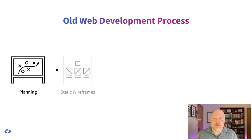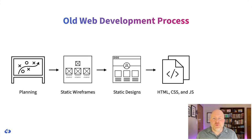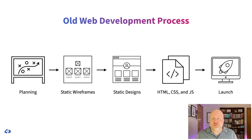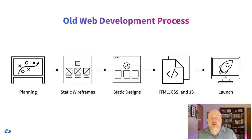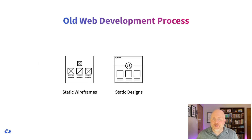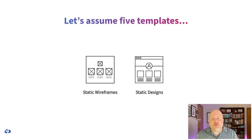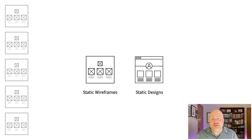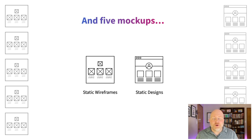This is how we've historically built sites. We put together some plans, we create some wireframes, then somebody creates mock-ups from those wireframes. Eventually, those mock-ups are converted into HTML, CSS, and JavaScript. And at some point, the site launches. Many organizations still use this process, but the truth is that responsive design broke this process in fundamental ways. Let's focus on two steps: the static wireframes and the static designs. If the site has five core templates, that means we'll need five wireframes and five mock-ups.